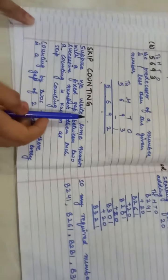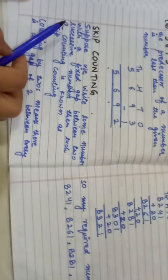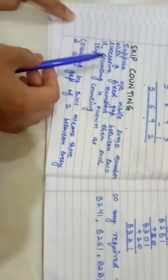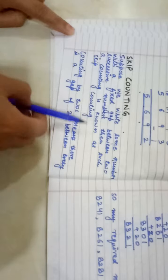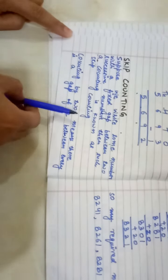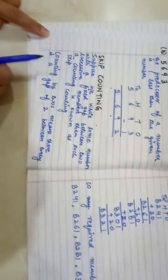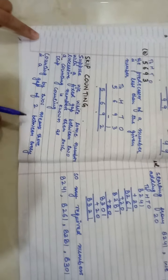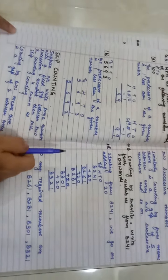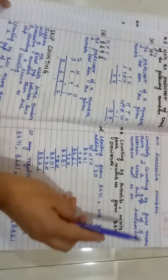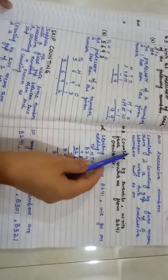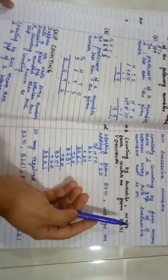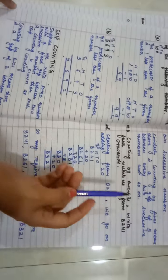Next is skip counting. Suppose we write some numbers with a fixed gap between two successive numbers. Then such a counting is known as skip counting. Counting by 2s means that there is a gap of 2 between every two successive numbers. Similarly, counting by 5 means that there is a gap of 5 between every two successive numbers, and so on.